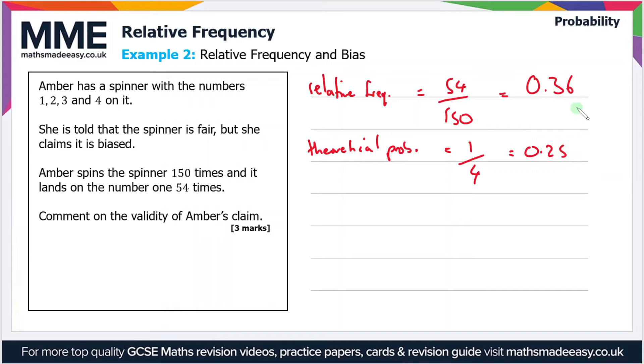So we can say that she's probably right—her claim is valid. Now of course it could be just a coincidence that it's landed on the one 54 times out of 150, but it's unlikely. The best way to test this would just be to do more trials. So if she did another 150 and she got another 54 ones, then she's definitely right.